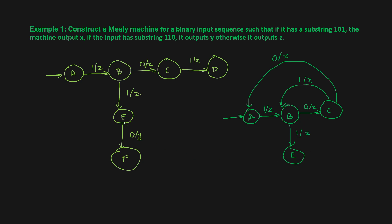Now what happens in state e? If you get 0, the output is y and you go to state c instead of state f. So: 1,1,0 takes you to state c with output y. And 1,0,1 takes you to state b with output x.